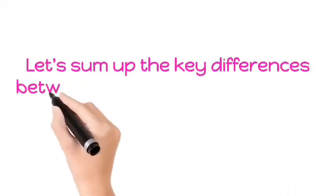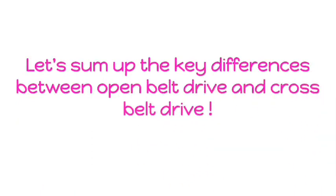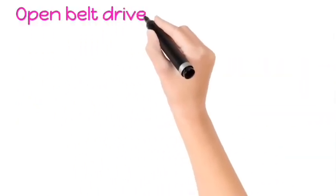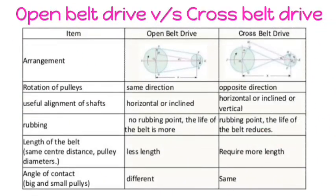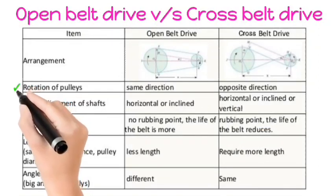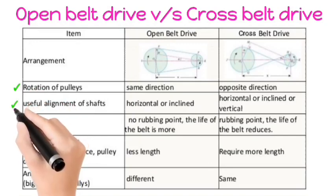Let's sum up the key differences between open belt drive and cross belt drive. Open belt drive versus cross belt drive. Rotation of pulleys is in same direction, while that in cross belt, it is opposite. Alignment of shaft: horizontal or inclined, while in cross belt, it can be vertical also.